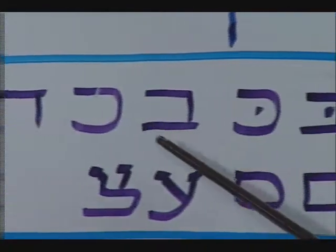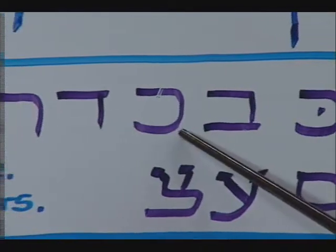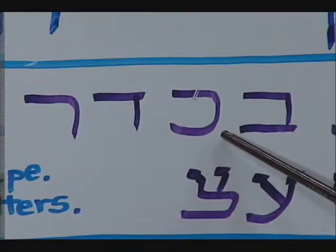Let's move on. You have, of course, the vet, which is just like the bet without the dot, and the khaf, which is just like the kaf without the dot. So that's the same similarity over there.